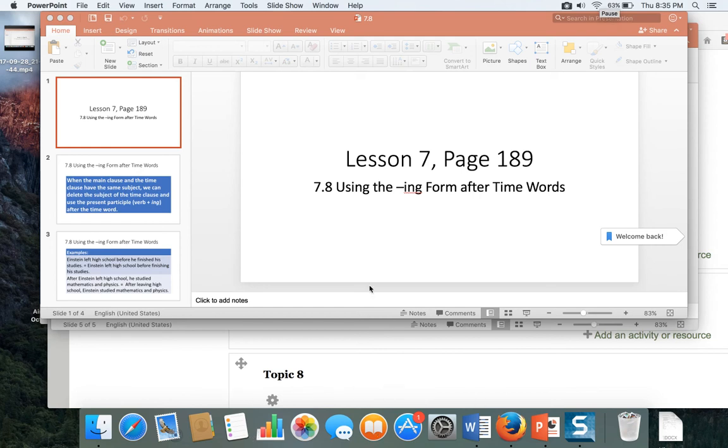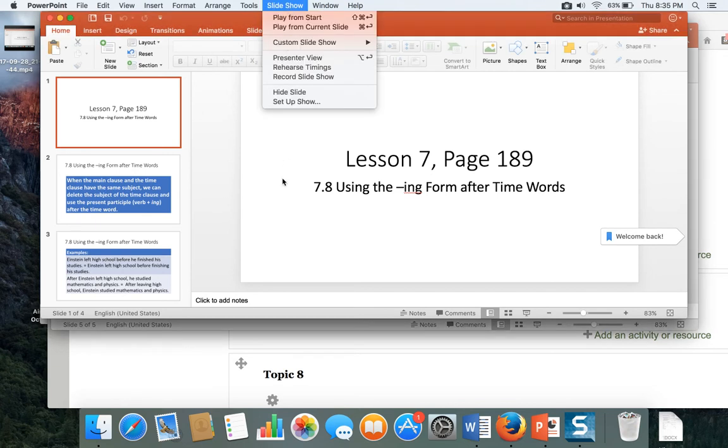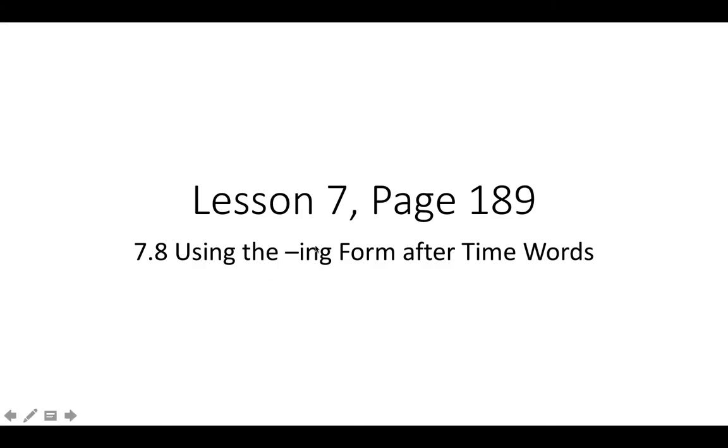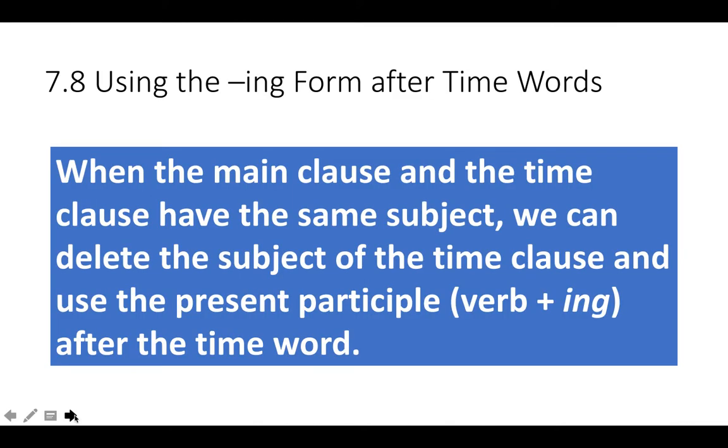Okay, this is Grammar Explanation 7.8 on page 189, and here we're just looking at a very simple thing that happens where we can use an -ing form. The -ing form is called the gerund. It's when I take a noun and add -ing to make a verb, and this is just something that happens.